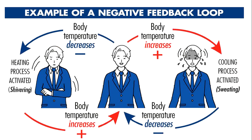If the body temperature declines, the hypothalamus activates emergency measures to produce and conserve heat, causing shivering, until temperature normalizes. Conversely, if body temperature rises, the hypothalamic centers activate sweating and increased skin blood circulation leading to heat dissipation, which normalizes temperature. Once normalized, the hypothalamic center is inhibited and the patient feels comfortable. This is how the negative feedback loop functions.